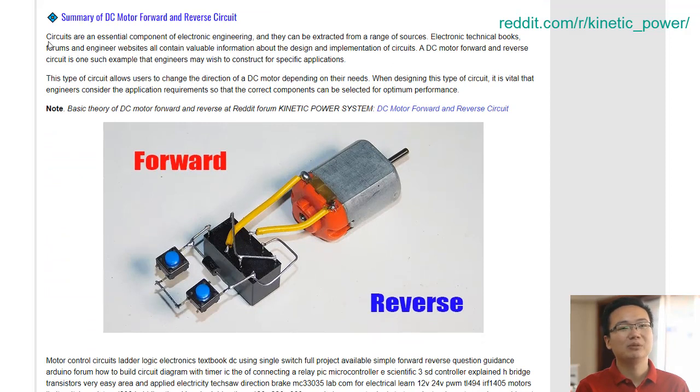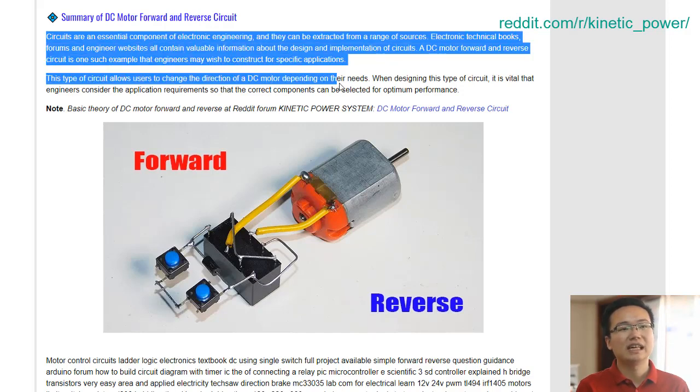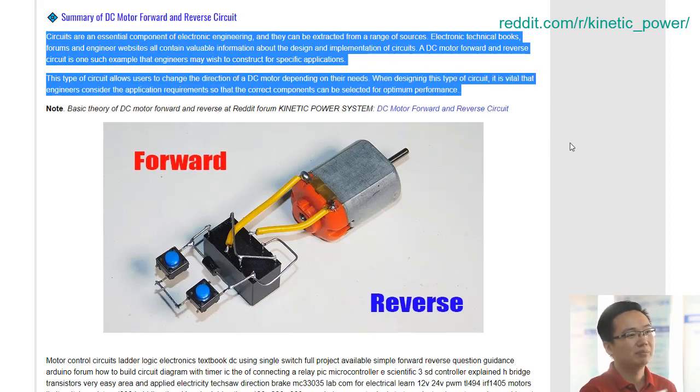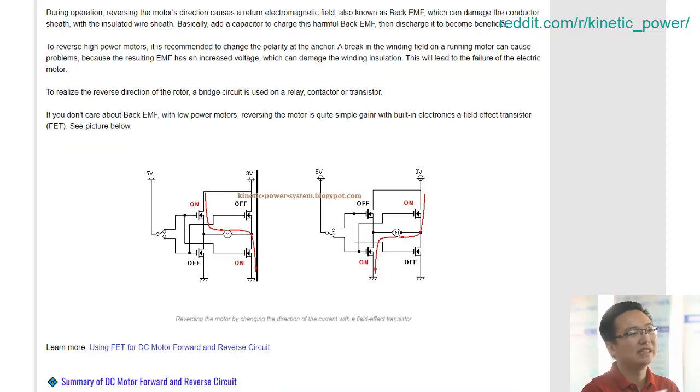In high-power industrial machines, the reverse and forward generate large back EMF, which can damage the wire insulation. Therefore, additional capacitors and noise-escape circuits are required. The DC motor forward and reverse circuit is an impressive piece of technology.